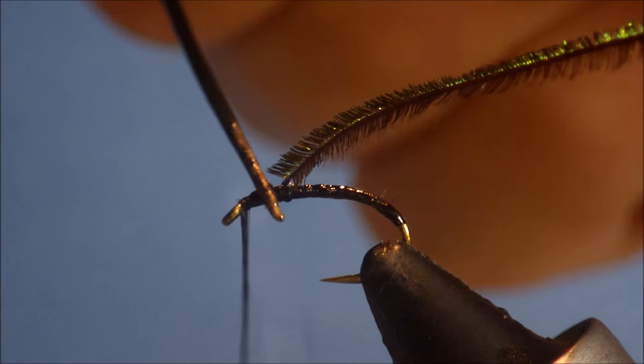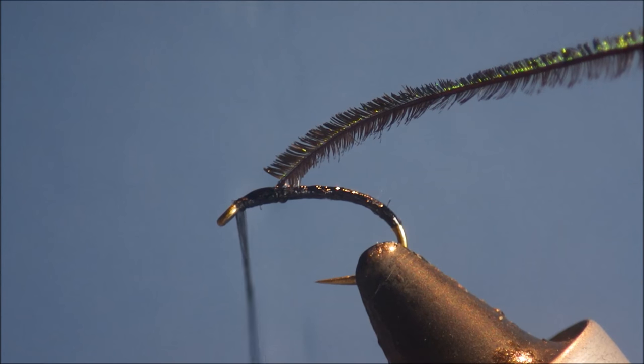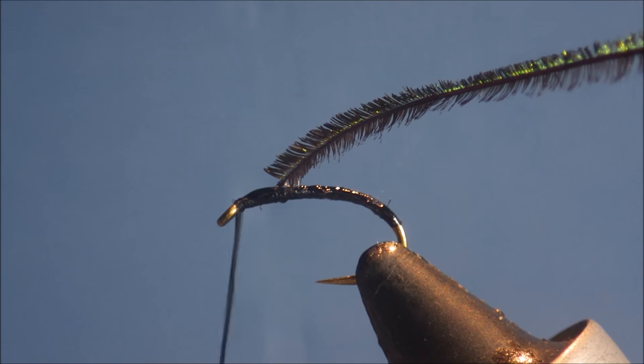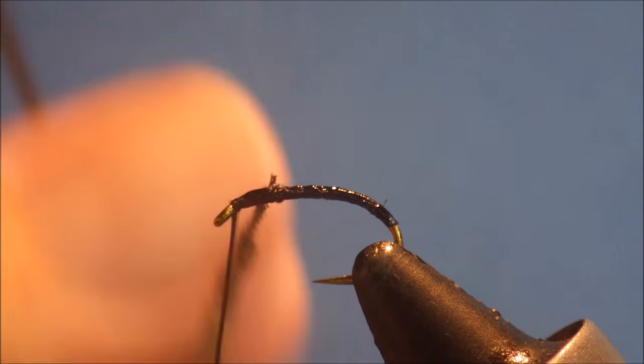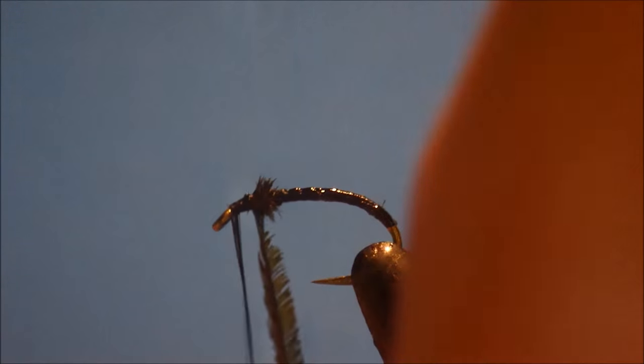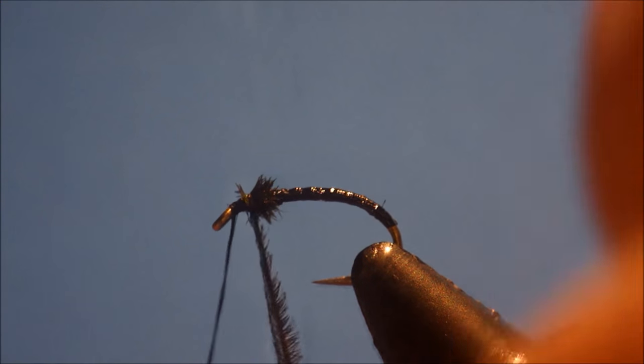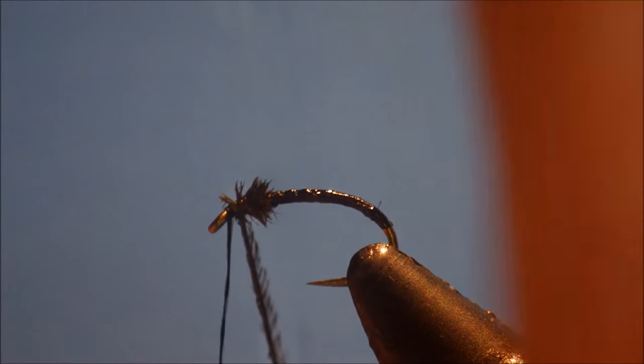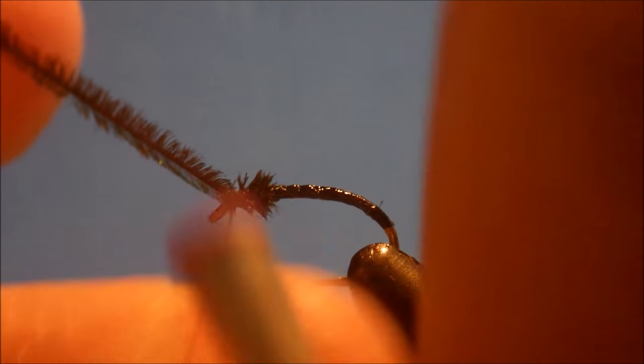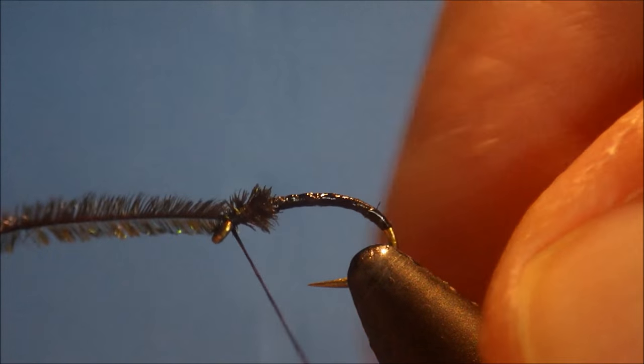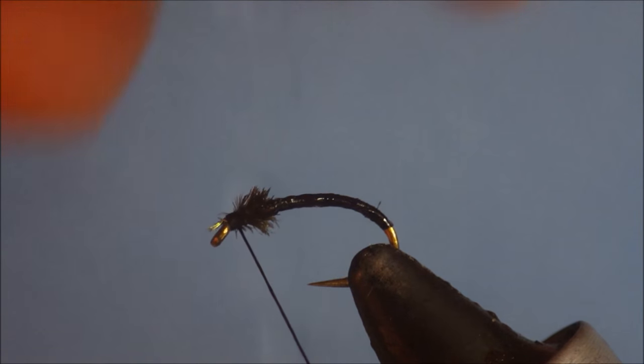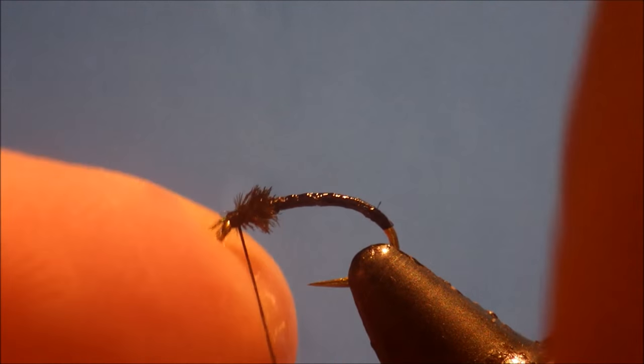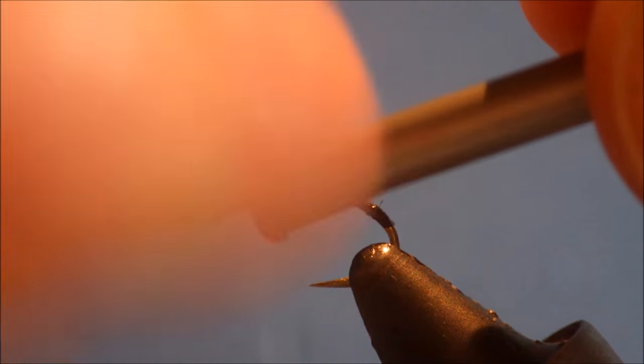And a small bit more head cement where the peacock is going to be wound, just to help protect it. And then just two or three turns forward. Creates a nice thorax. Come across your thread one turn and fold it back. Three turns. Hold your thread tight to break away the peacock herl. And then a quick finish.